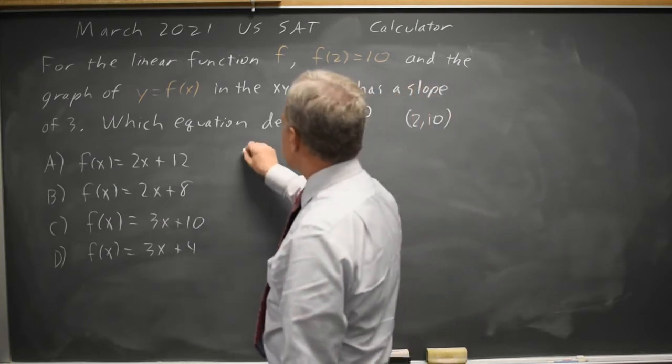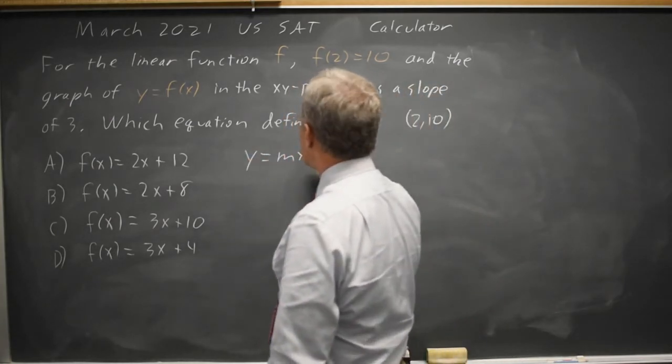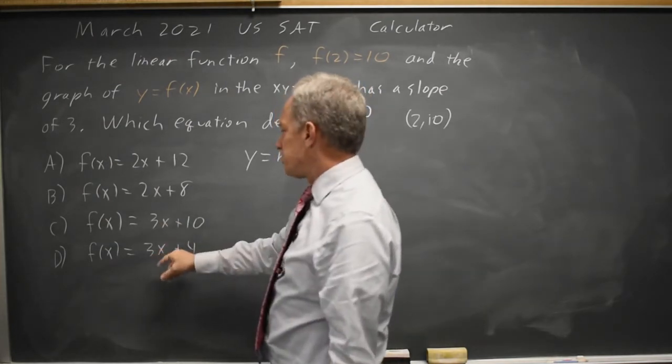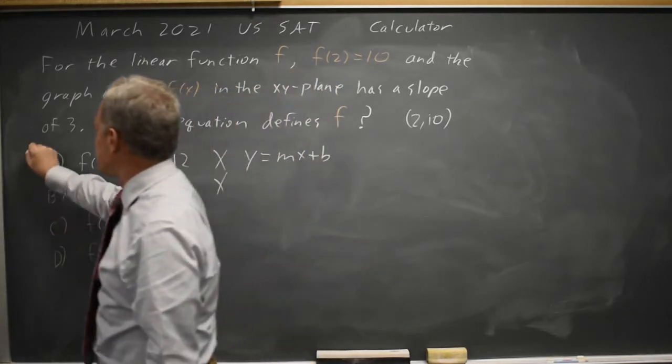In the form y equals mx plus b, m is 3, so it would be y equals 3x plus a constant. Choices a and b are not the correct answer.